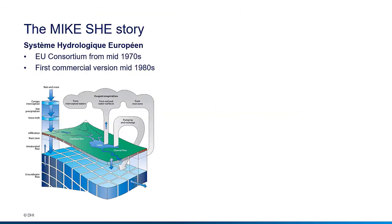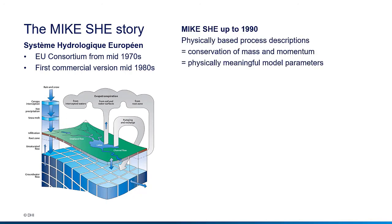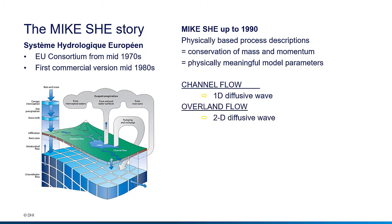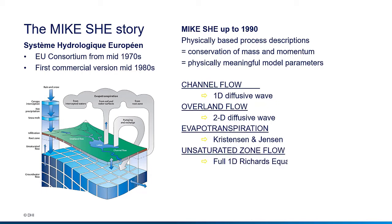The MIKE SHE system was originally developed by an EU consortium formed in the 1970s, and the first commercial version was released by DHI in the mid-1980s. Up until the 1990s, MIKE SHE only included physically based descriptions of the flow processes for the following components: channel flow, overland flow, evapotranspiration, unsaturated zone flow, and saturated zone flow.